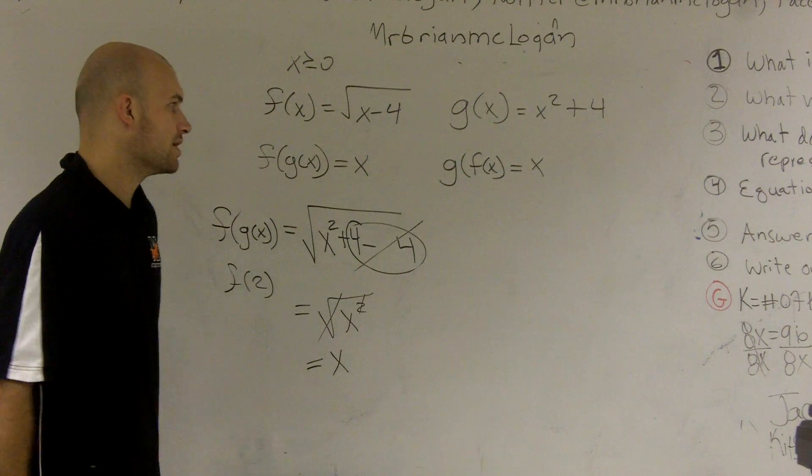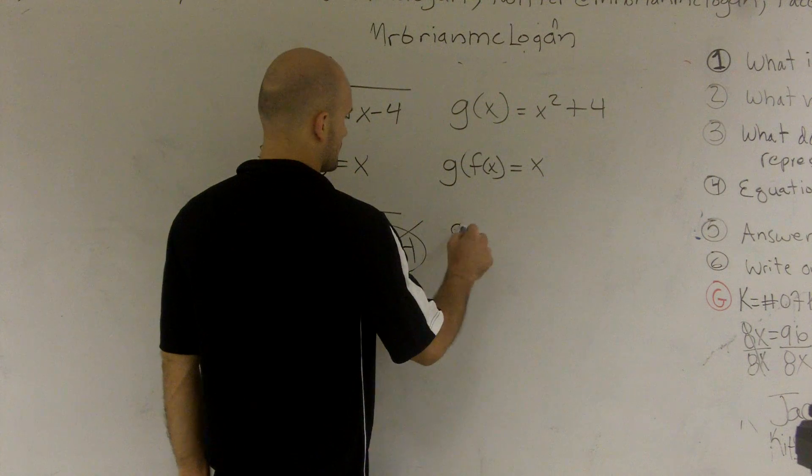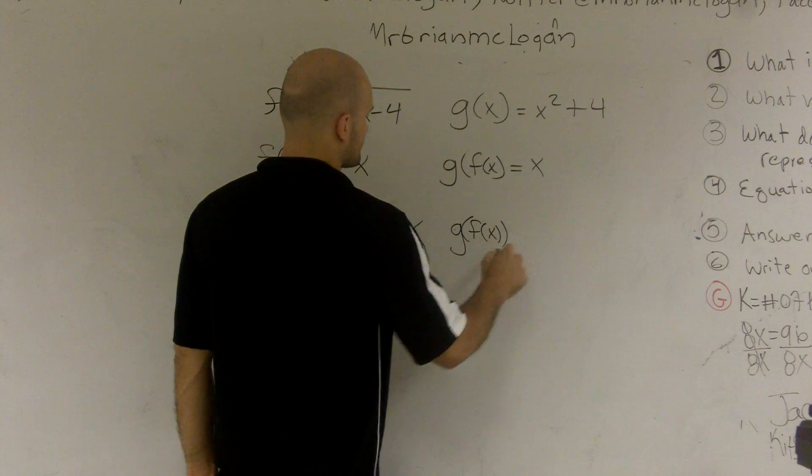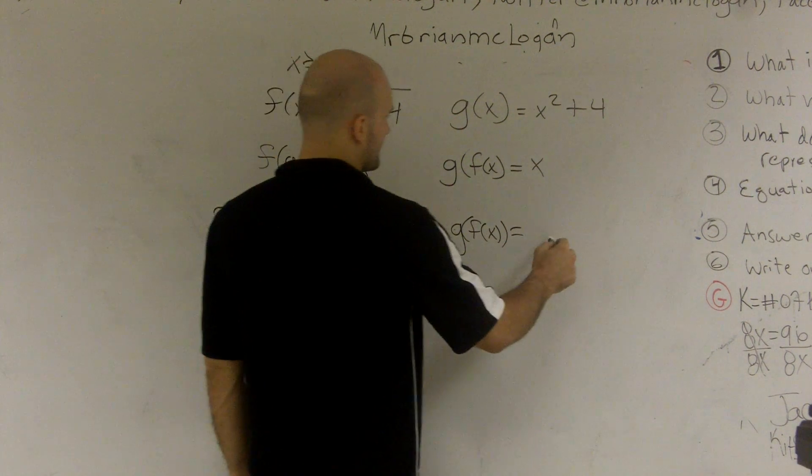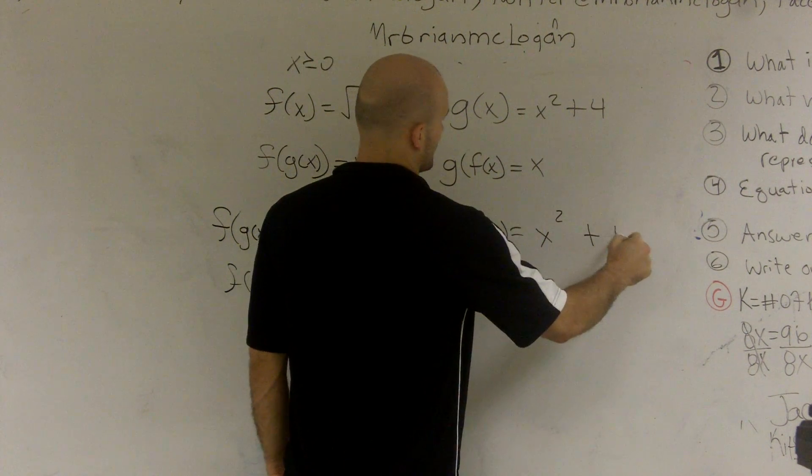So now let's do the composition of g of x, or g of f of x. It's going to look like this. So I have x squared plus 4.